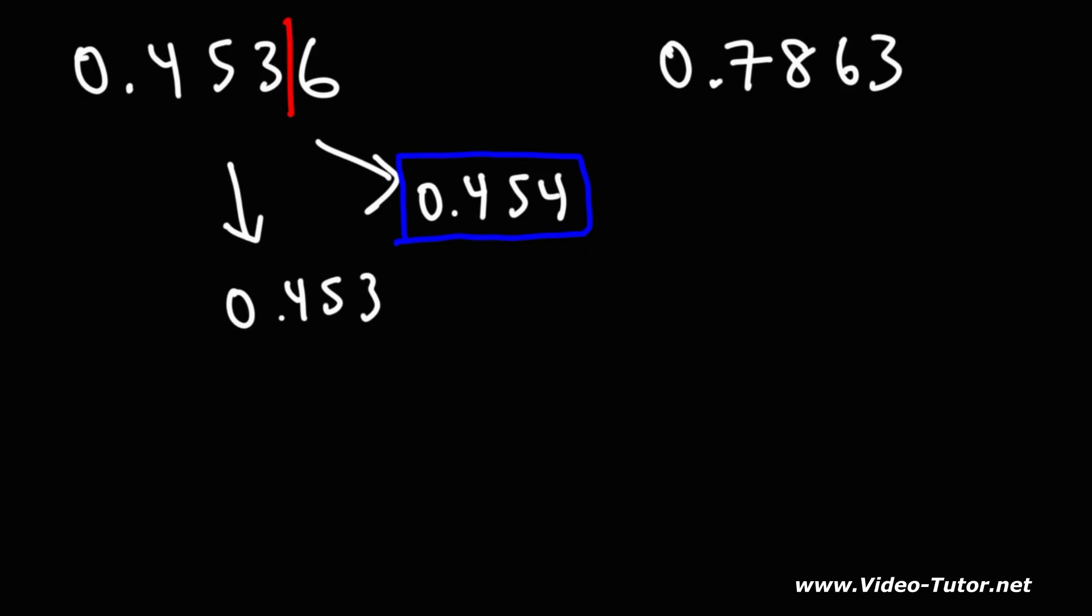Now what about the second one? How can we round 0.7863 to the nearest thousandth? Feel free to pause the video if you want to try it.